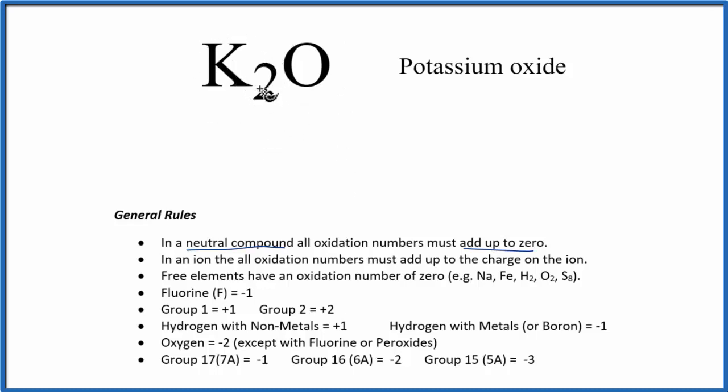So potassium is in group one on the periodic table. And when we have elements in group one, they have a plus one oxidation number.